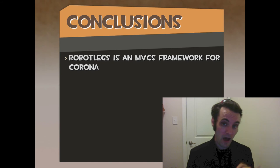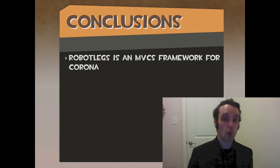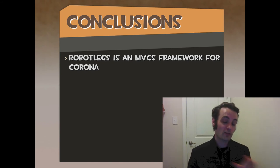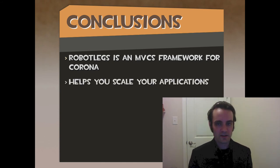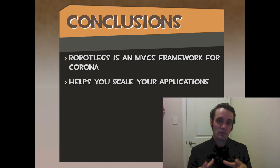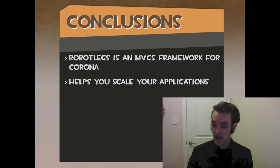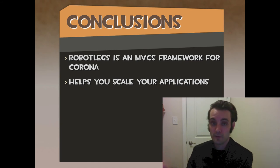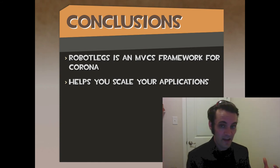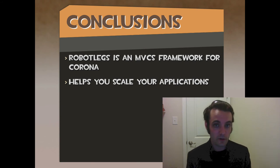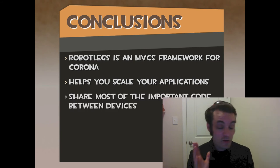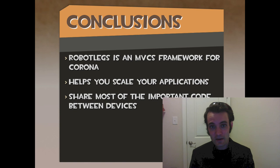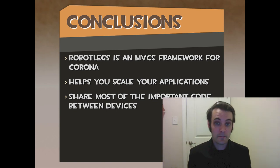In conclusion, RobotLegs is an MVCs — Model View Controller Service — framework for Corona SDK to build cross-platform, multi-device applications. It helps you scale your application; that's really what it's for. You can use MVC the way it's been chosen and documented on the web. It's currently open source and you can contribute. It's already based on an existing platform that had a lot of success, bringing over concepts because Corona, Flash, and AIR had very similar development workflows.